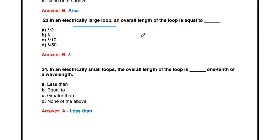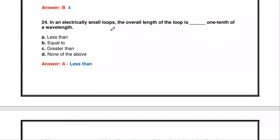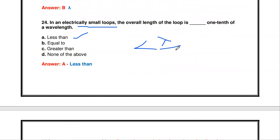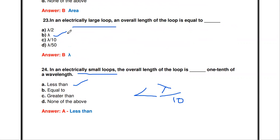In an electrically large loop, the overall length of the loop is equal to lambda. If the overall length is approximately equal to lambda, it is called a large loop. In an electrically small loop, the overall length is less than one-tenth of the wavelength, that is lambda divided by 10. If the length is less than lambda/10 it is called a small loop.